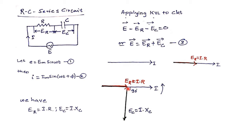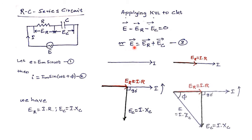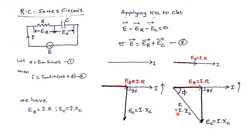I draw vector EC at the end of ER because I want to add ER and EC — using the graphical method of adding vectors. From the vector equation, the resultant voltage E is given by the vector sum of ER and EC. Therefore ER + EC = E, which equals I × ZC, where ZC is the capacitive impedance of the circuit. This represents the phasor diagram for the RC series circuit. The arrow mark shown beside I indicates the assumed positive direction of rotation of vectors is anticlockwise, and with this direction the leading of current is justified.